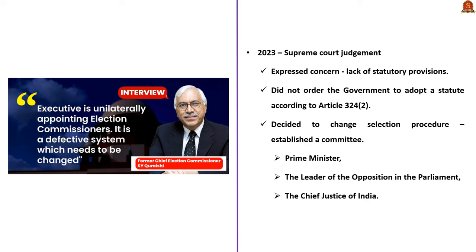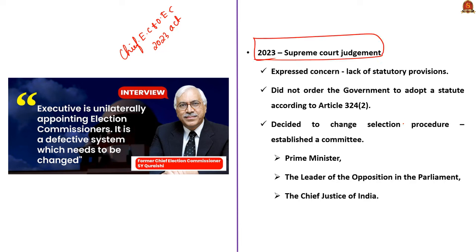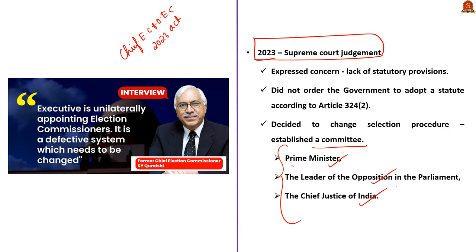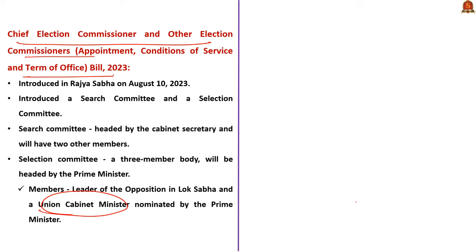Recently there was controversy regarding the appointment process of election commissioners. The Central Government has passed the Chief Election Commissioner and Other Election Commissioners Act 2023. Last year, the Supreme Court passed a judgment that election commissioners must be appointed by the President on the advice of a selection committee including the Prime Minister, Leader of Opposition in Lok Sabha, and Chief Justice of India. But the new Act has countered this judgment — it has replaced the Chief Justice of India with a Cabinet Minister on the selection committee. So the selection committee now includes the Prime Minister, a Cabinet Minister, and the Leader of Opposition, giving the Central Government a dominant role in the appointment process.